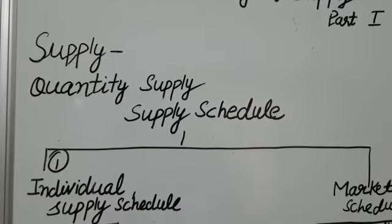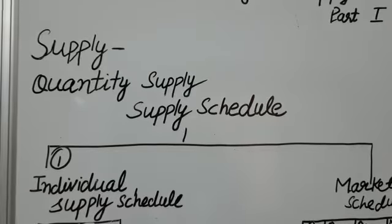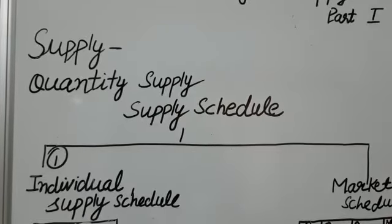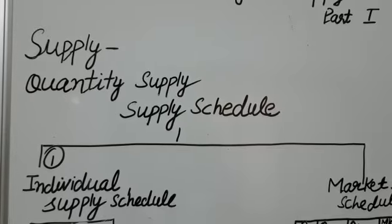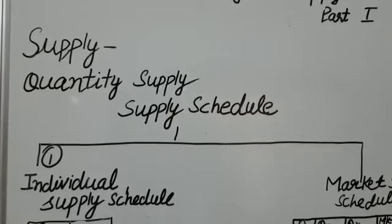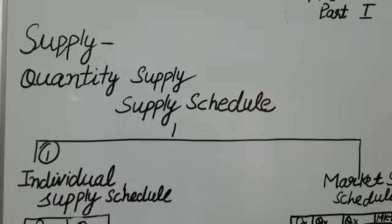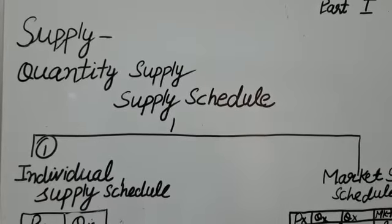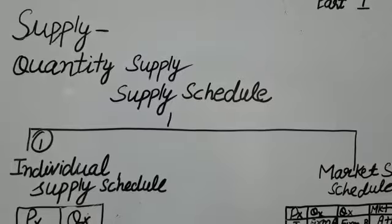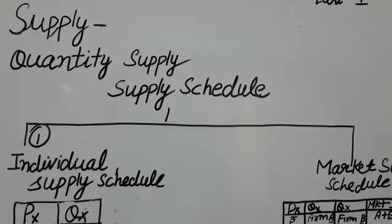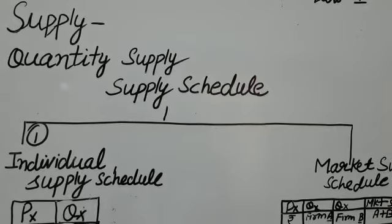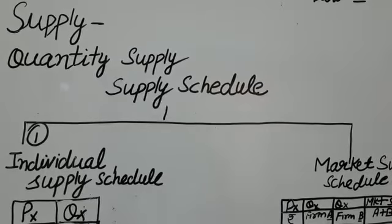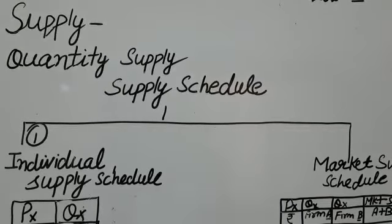Supply is the quantity of a commodity which a seller is willing to sell at a given time and at a given price. Or we can also define it as various quantities of a commodity that producers are willing to sell at different possible prices at a point of time. Whereas quantity supplied refers to a specific quantity which a producer is ready to sell at a specific price of a commodity.